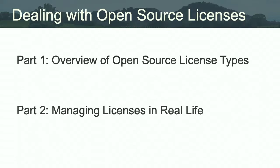I'm going to be talking about a couple of things relating to how open source licenses work. First, a quick high-level overview of open source licenses and different types of licenses. And then second, getting into some of the details of what this looks like in practice when trying to manage license information, given the way that modern development works. Please jump in with any questions — we've got a fairly small group, so happy to stop and answer questions as we go along.